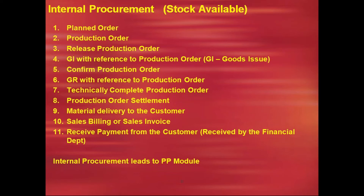Picking, packing, shipping, loading and unloading — the material is delivered to the customer, and the company receives payment by sending a sales invoice or sales billing. The financial department handles the incoming payment. This total procurement cycle is called internal procurement, which leads to the module called PP — Production Planning.